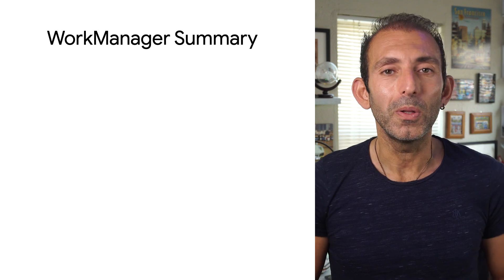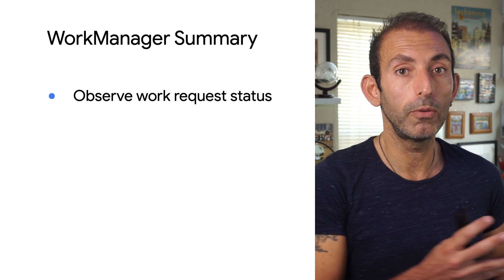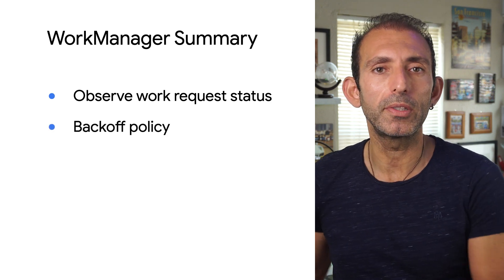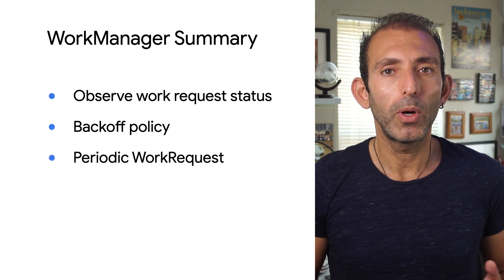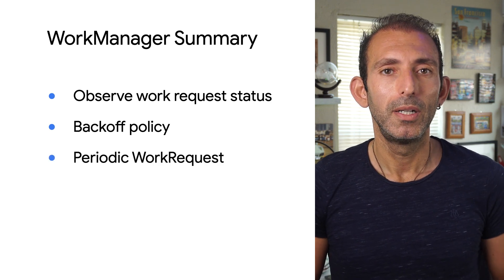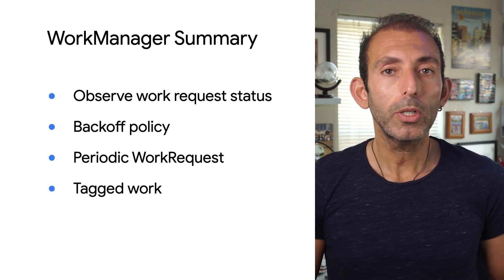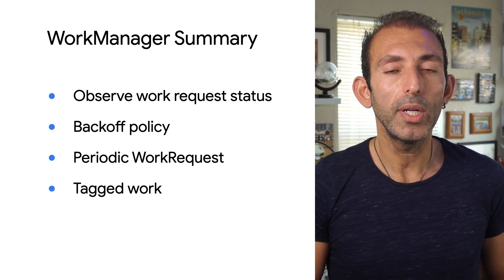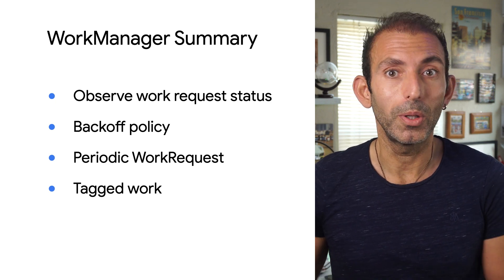That's not all. With WorkManager, you can do a lot more, such as observing the work request status and having back-off policies for retrying work. You can also define periodic work requests, which can run a particular worker repeatedly. You can use tags to tag a particular work request. Tags can be used to observe the work request status or cancel the request if it is no longer needed.